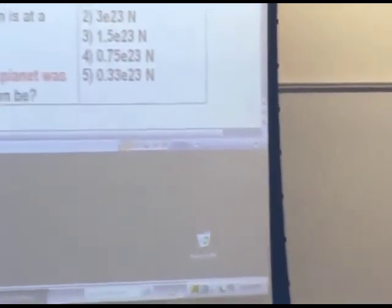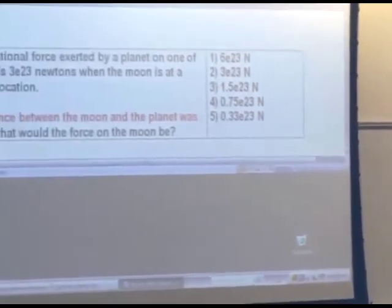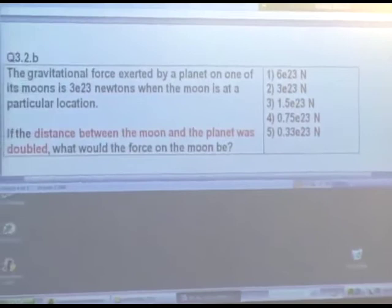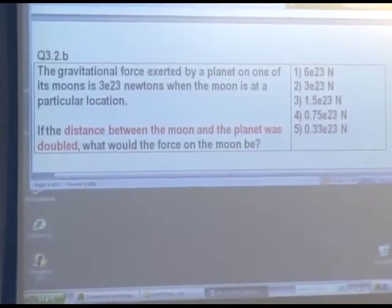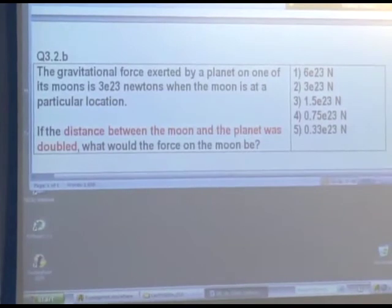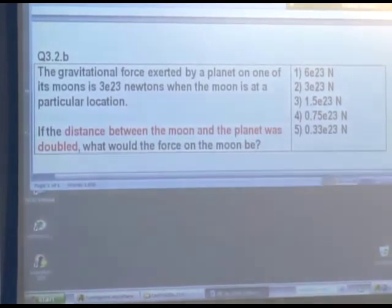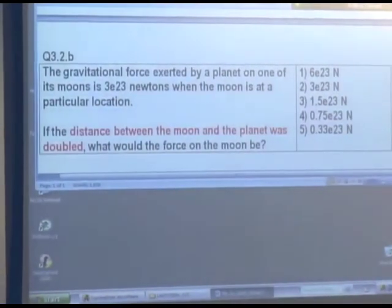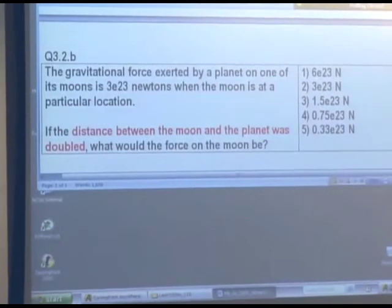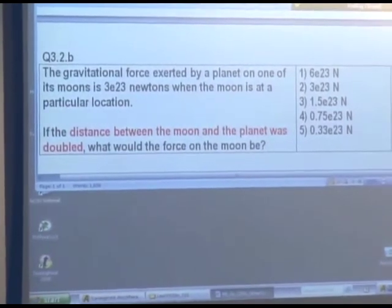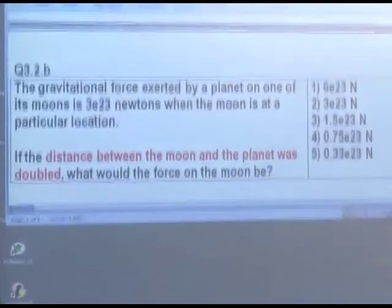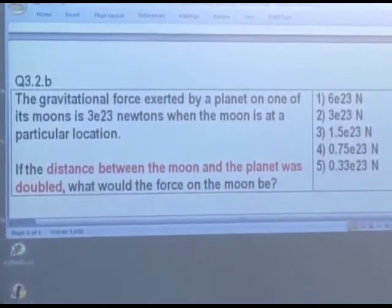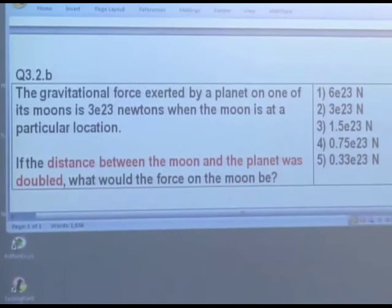Suppose that a planet exerts a gravitational force whose magnitude is 3 times 10 to the 23rd Newtons when the moon's at a particular location. And the question is, suppose that at a different time in these orbits, the distance between the moon and the planet is twice as large. Now what would the force on the moon be due to the planet?